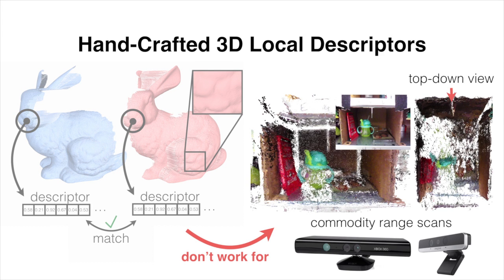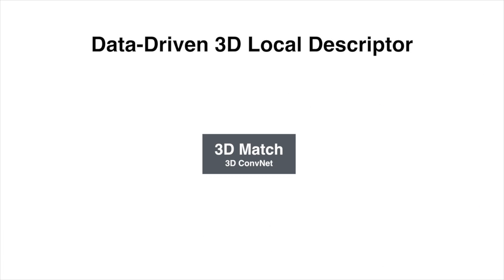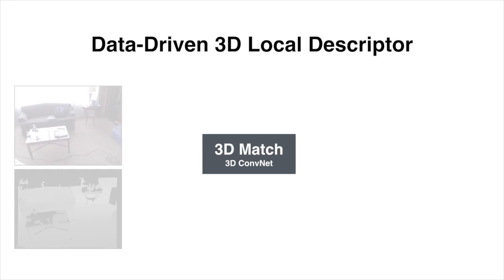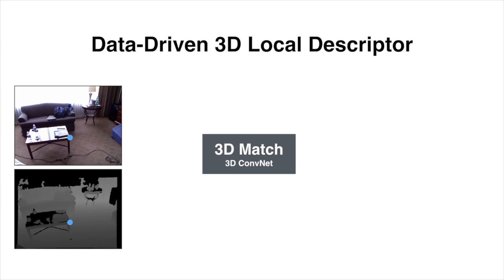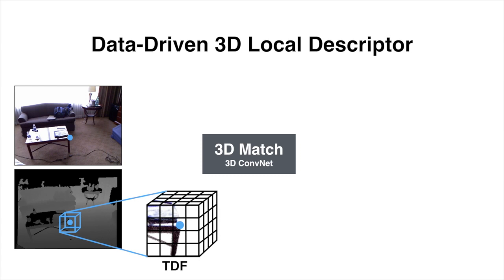To address these shortcomings, we present 3DMatch, a data-driven method that learns a local geometric descriptor using a 3D convolutional neural network. Given an interest point on a 3D surface, we take the local volumetric region around the point and convert it into a 3D voxel grid representation called TDF. We refer to this small voxel volume as the interest point's local 3D patch, and feed this volume into 3DMatch to compute a feature descriptor for that point.